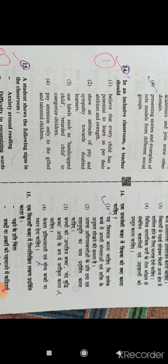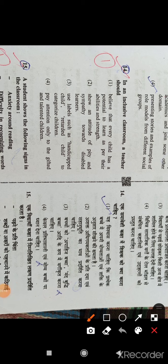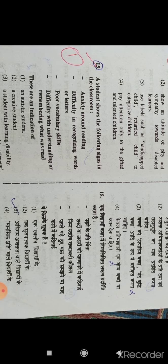Question number 14: In an inclusive classroom, a teacher should believe that every child has a potential to learn as per their abilities and strength. Option A is the right answer. This should be to trust that every child should be able to learn according to their skills and strengths.